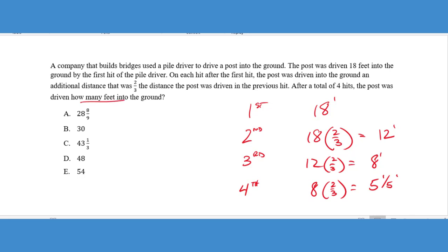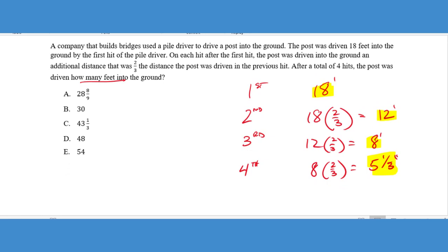Now what's happened here, it says after four hits, how many feet was the post driven into the ground? So we know that it was driven into the ground 18 feet the first hit, 12 feet the second hit, eight more feet the third hit and five and a third feet on the fourth hit. And so if I were to add all of those together, I would get 43 and a third feet that the post was driven into the ground and we can see that that is answer choice C.